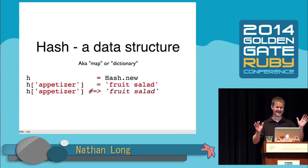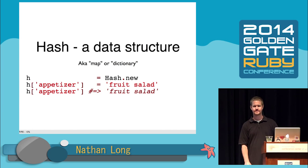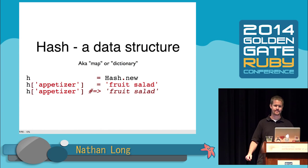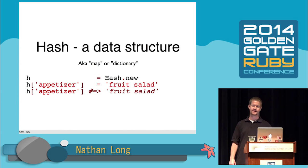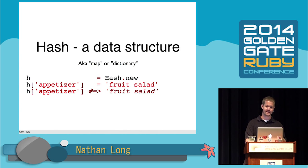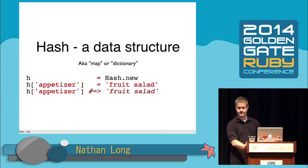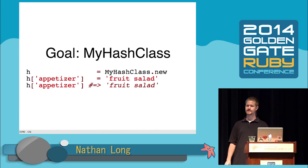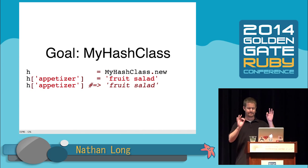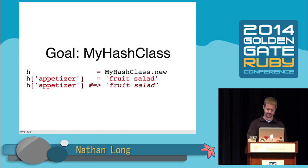Okay, so what is a hash? Everybody knows this, I think, but some way we just call it a map or a dictionary, but it's basically just a way to associate keys and values. I can say the key of 'appetizer' has the value of 'fruit salad.' I can ask for 'appetizer' and it'll give me 'fruit salad' back. So this is our basic goal — we want to make our own class that behaves the same way. Easy peasy, right? We can do this.